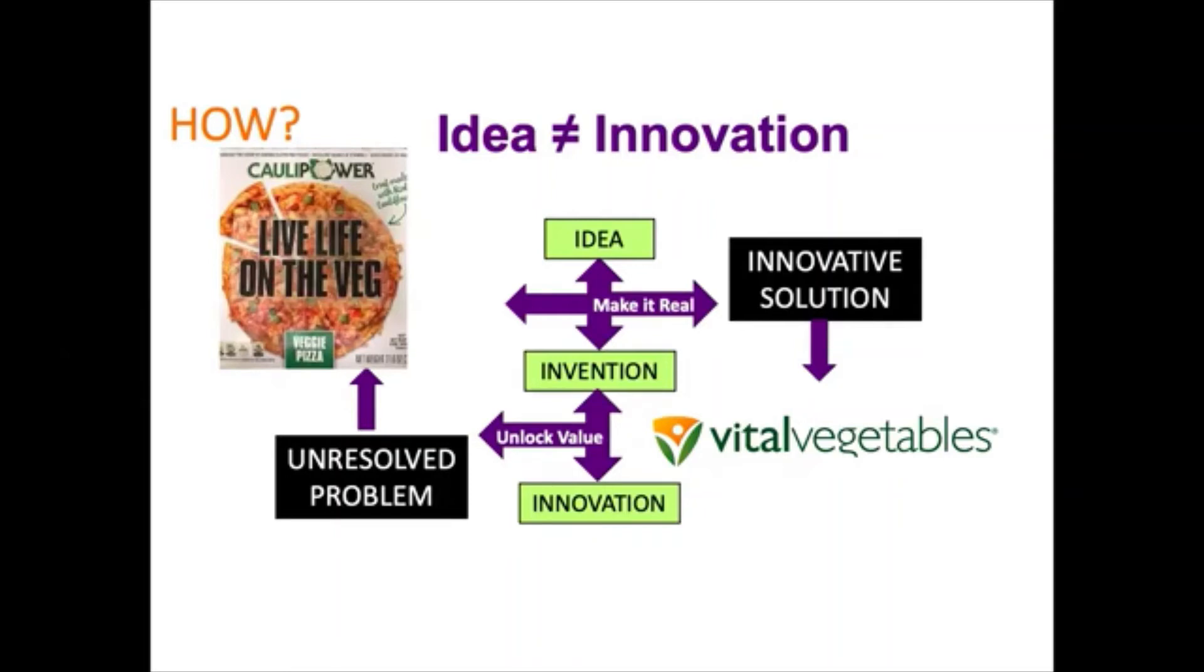Compare that with this lady, an HR executive who created Caulipower. She was sick and tired of gluten-free pizza bases that tasted like cardboard and were high in carbs. She created a cauliflower pizza base. In her first year of sales, she sold $45 million worth of product. The company is now worth half a billion dollars and she's worth over $200 million US. The Vital Vegetables Project had hundreds of smart scientists spending millions of dollars and have had zero effect on increasing vegetable consumption. This person has profoundly increased vegetable consumption of cauliflower and made a lot of money doing it.